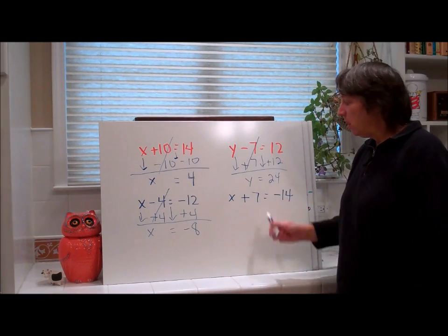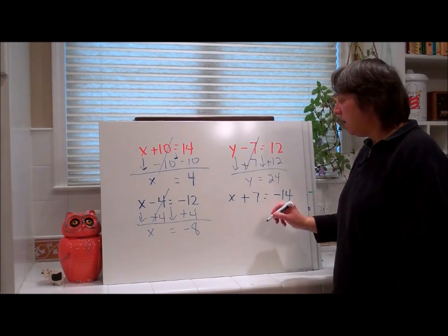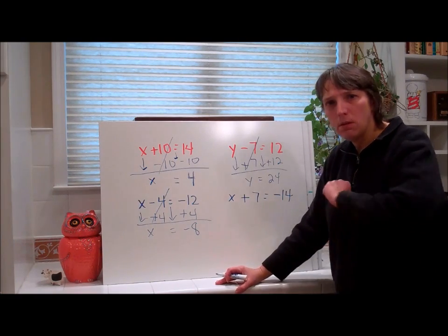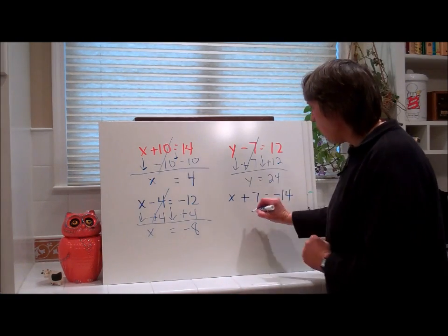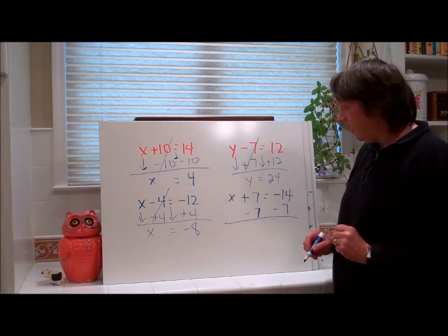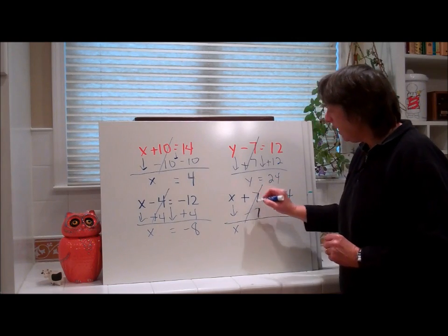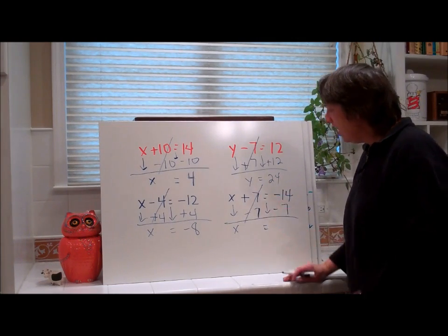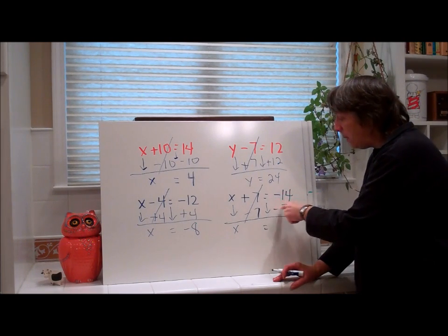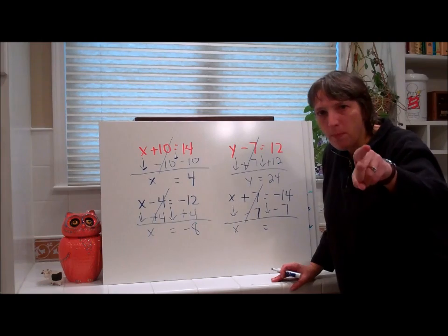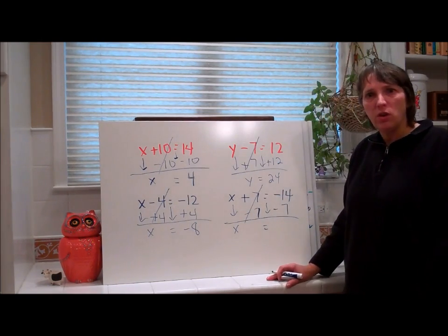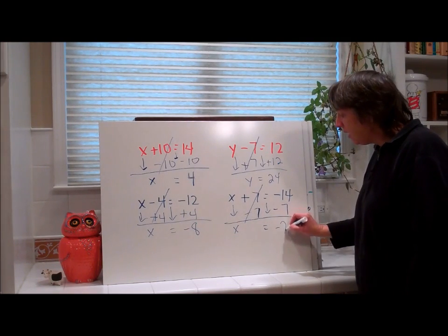Now we go to this one. What are we doing to the variable? We're adding 7. How do we undo it? We find the inverse. What's the inverse of adding 7? Subtracting 7. Lots of mistakes happen here. We're going to bring down the x. These cancel. Bring down the equals. We read exactly what's there. Negative 14 minus 7. Think thermometer. It's 14 below 0. It drops 7 degrees. It is negative 21.